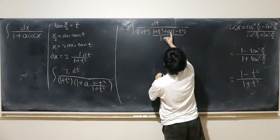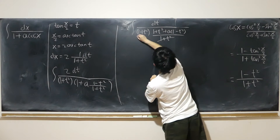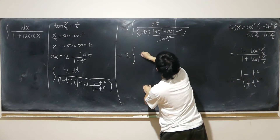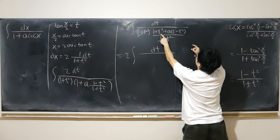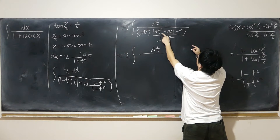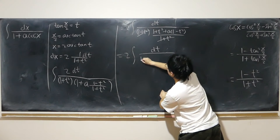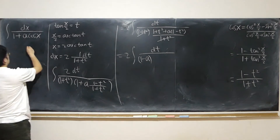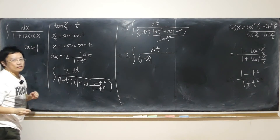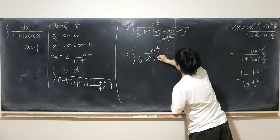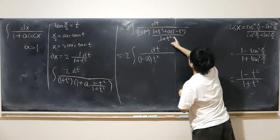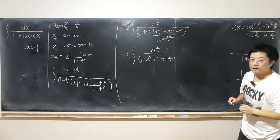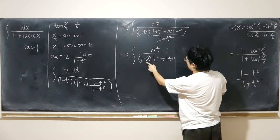After cancellation I just need 2 dt over the combined expression. Combining the t squared terms gives (1 minus a) t squared plus (1 plus a). There is a condition: we require a to be bigger than 1. So 1 minus a is negative.